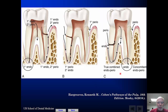The final category is the true combined lesion. This can be diagnostically challenging — do you have primary periodontal, primary endo, or both? This drawing gives you an idea of what's going on, but it's really not definitive.